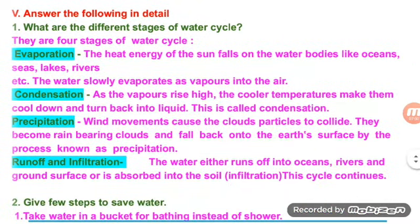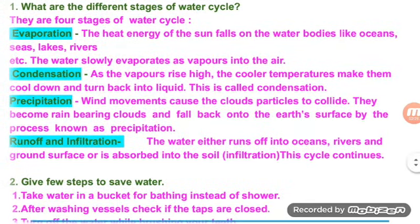Condensation: As the vapors rise high, the cooler temperatures make them cool down and turn back into liquid. This is called condensation. Precipitation: Wind movements cause the cloud particles to cool. They become rain-bearing clouds and fall back onto the earth's surface by the process known as precipitation. Runoff and infiltration: The water either runs off into oceans, rivers and ground surface, or is absorbed into the soil. This cycle continues.